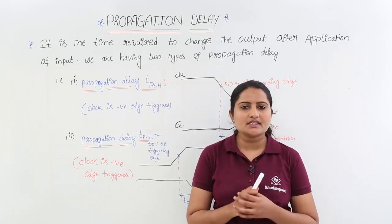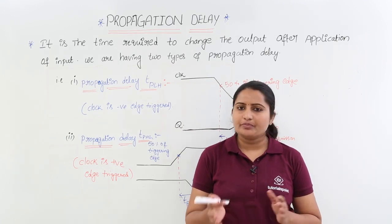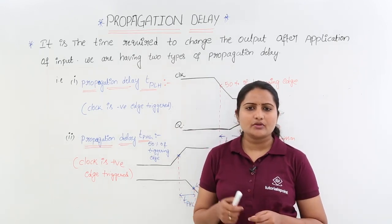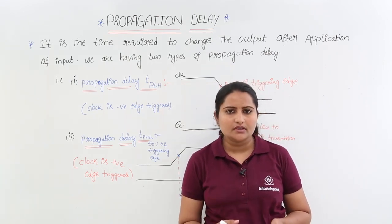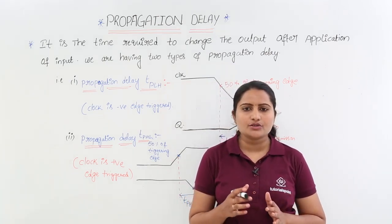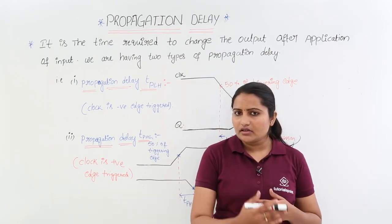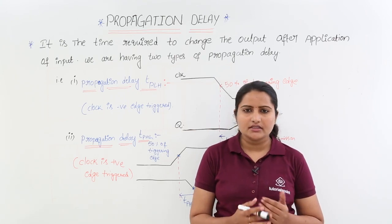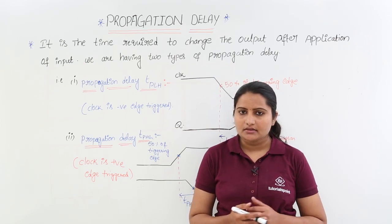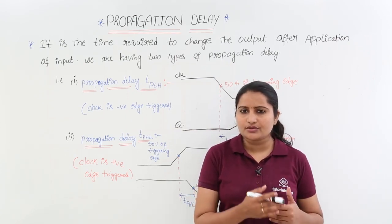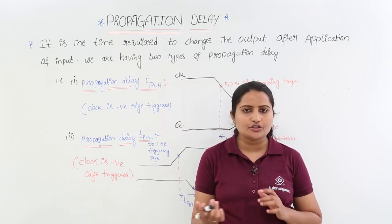In this class we are going to discuss about propagation delay in sequential circuits. Previously we discussed about propagation delay in digital circuits, where we came to know that propagation delay is equal to 1 by 2 into fundamental frequency. Now we are dealing with propagation delay in sequential circuits, and we have 2 propagation delays, categorized into propagation delay low to high and propagation delay high to low.